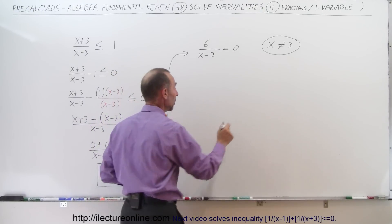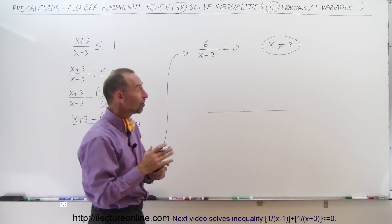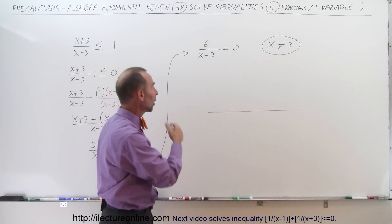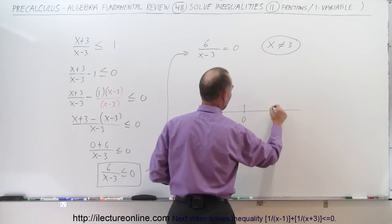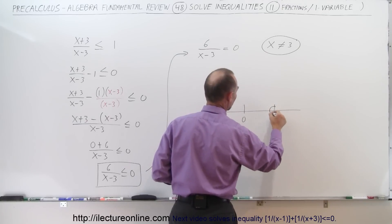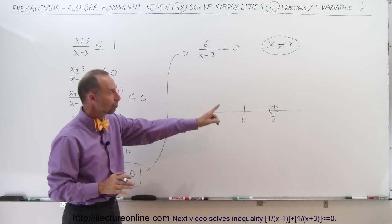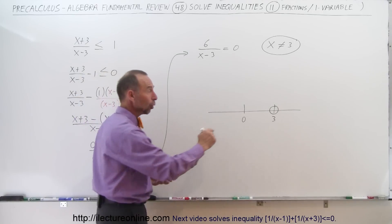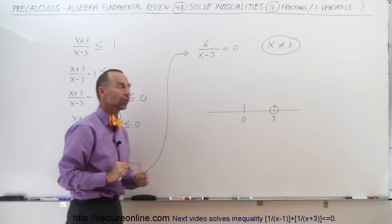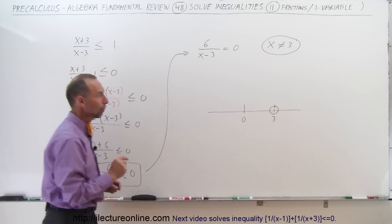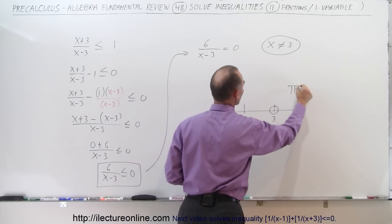The critical point x equals 3 divides the number line into two regions. Since x cannot equal 3, we draw an open circle at 3 indicating it is not part of the solution. This gives us Region 1 (to the left of 3) and Region 2 (to the right of 3).